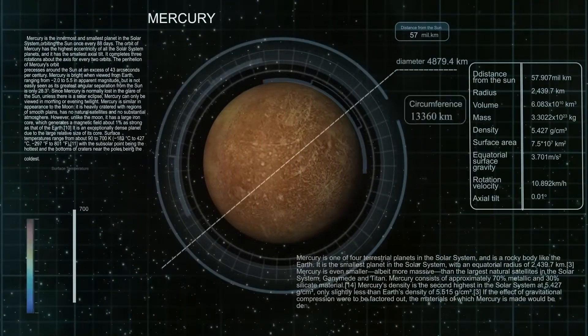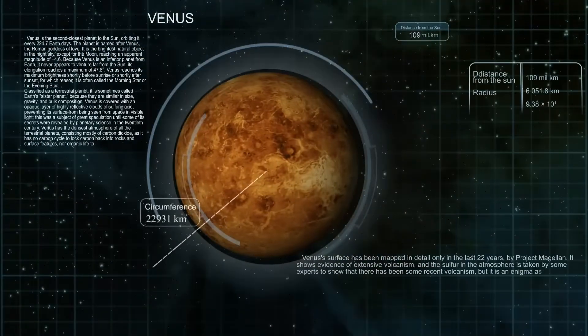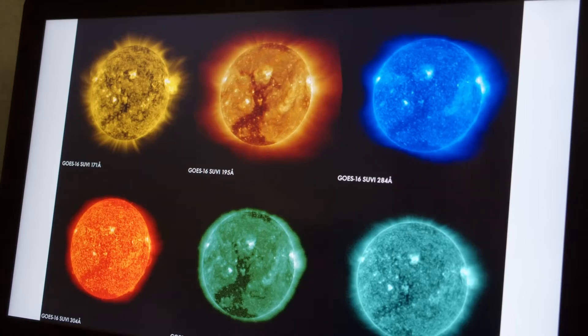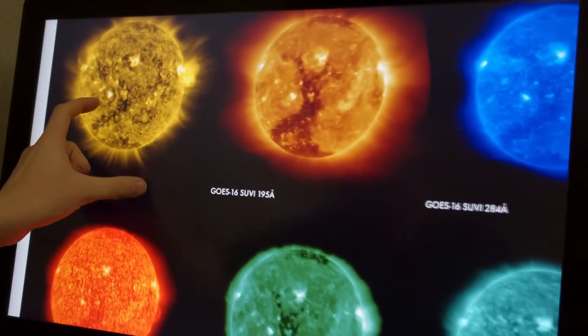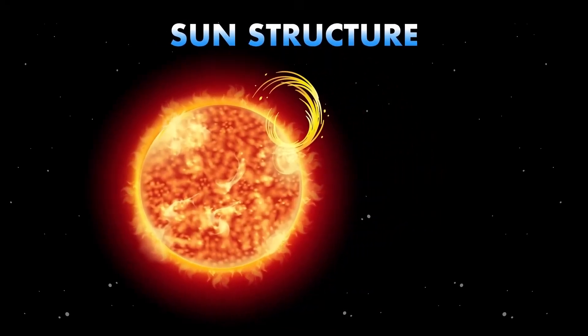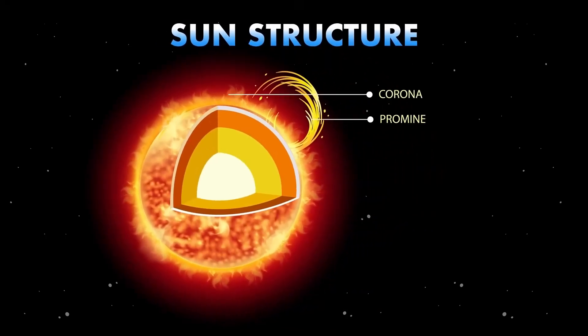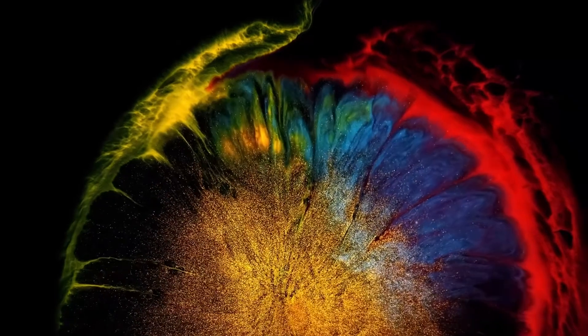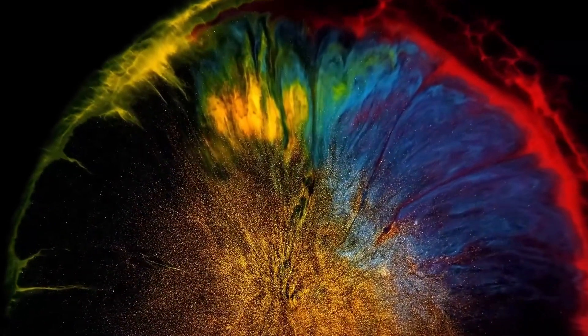This question has been asked before. Back in 2017, a much smaller object called Oumuamua passed through the solar system. It also changed its path in a way we couldn't explain. It had no gas jets, no visible coma - just a mystery push. Now, with Atlas doing something similar but on a much bigger scale, scientists are starting to wonder: is this a pattern?